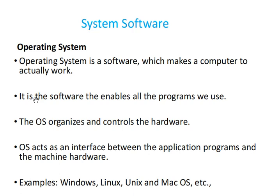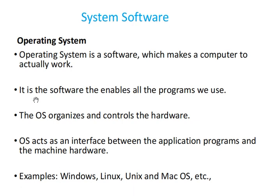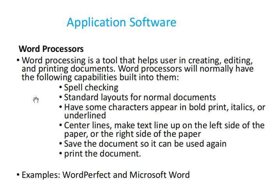System software, specifically the operating system, is the software that makes the computer work. It organizes and controls the hardware and acts as an interface between the user and the machine. Word processors, on the other hand, are examples of application software — used for a specific task. A word processing tool helps users create, edit, and print documents.